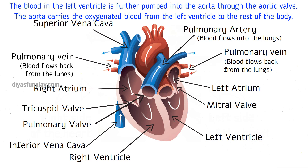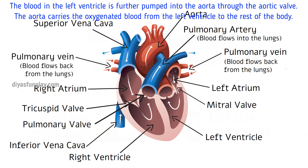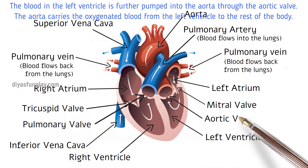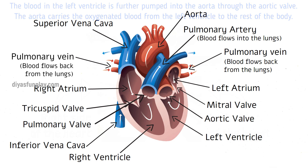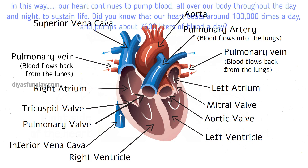The blood in the left ventricle is further pumped into the aorta through the aortic valve. The aorta carries the oxygenated blood from the left ventricle to the rest of the body. In short, the function of the left side of the heart is to pump the oxygenated blood it receives from the lungs to the rest of the body. In this way, our heart continues to pump blood all over our body throughout the day and night to sustain life.